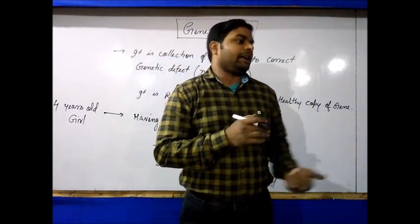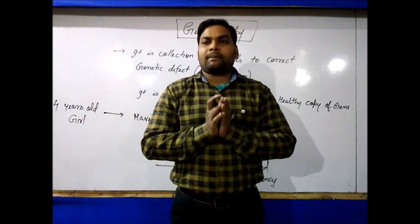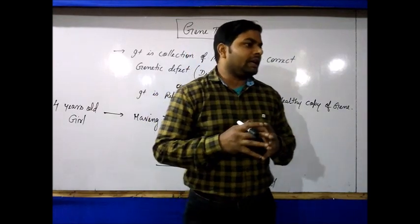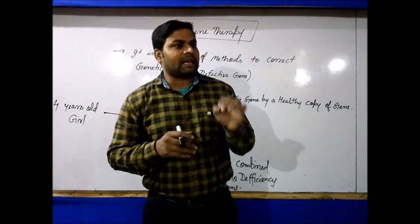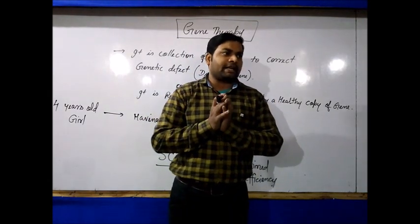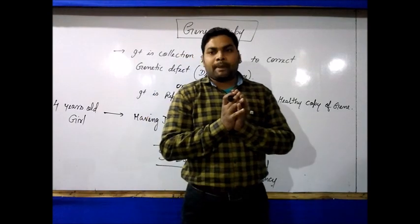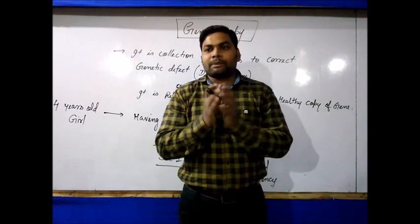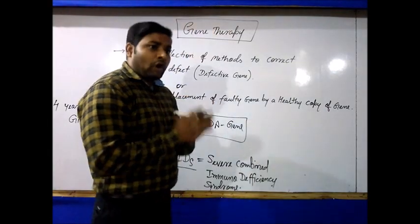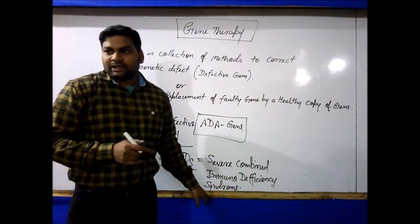When the B and T lymphocytes are not mature, acquired immunity is compromised. When the immune system is compromised, many small diseases cannot be controlled, and when many diseases occur together, there is a collection of symptoms — which is why we use the word syndrome.